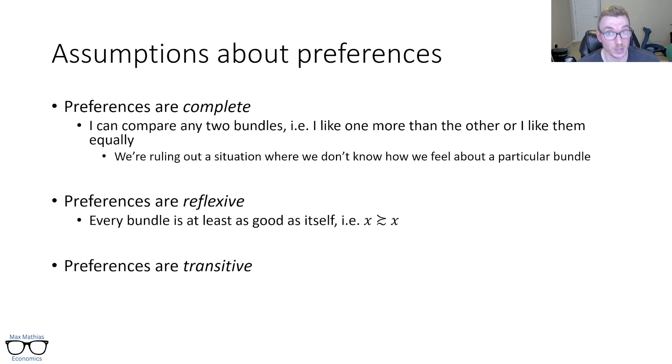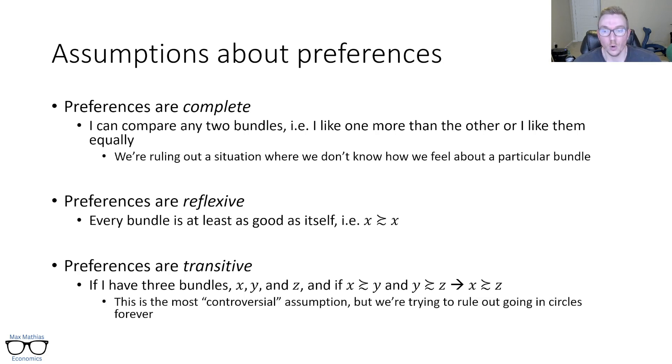And then the last is preferences are transitive. So if we have three bundles, X, Y, and Z, if you like X more than Y and Y more than Z, then by that property, you should like X more than Z. I will say this is probably the most controversial assumption. We're trying to rule out going in circles forever. So if you had a case where like X is better than Y, Y is better than Z, but then Z is better than X, you're in an infinite loop. And where do we stop? But we do know that people violate transitivity in real life. You know, you may like Coke more than Pepsi and Pepsi more than like RC Cola, but maybe you like RC Cola more than Coke because you're a weirdo. I don't know. But while I generally think transitive is a pretty good assumption, sometimes people don't obey it. That's fine.